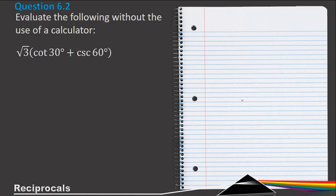And then evaluate the following: √3 (cot 30° + cosec 60°).